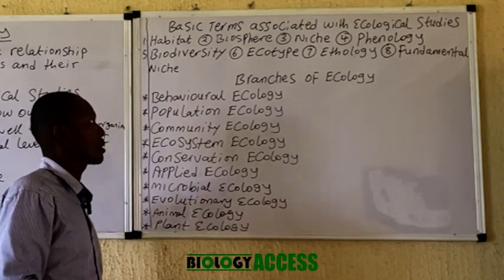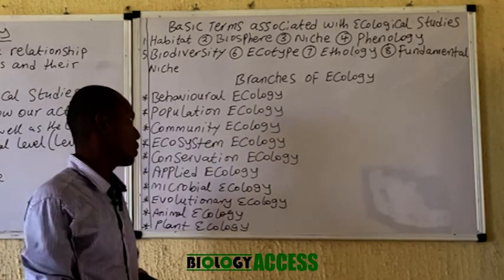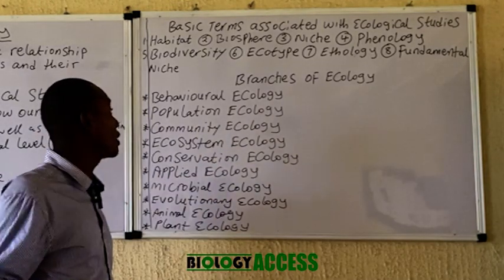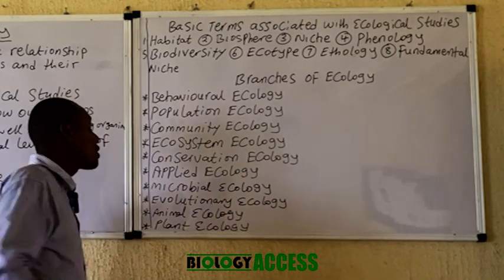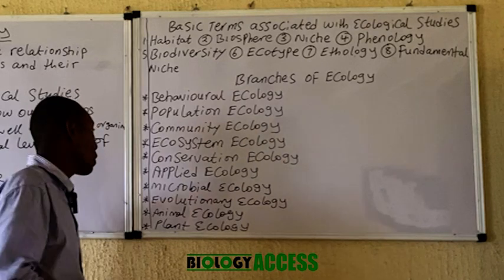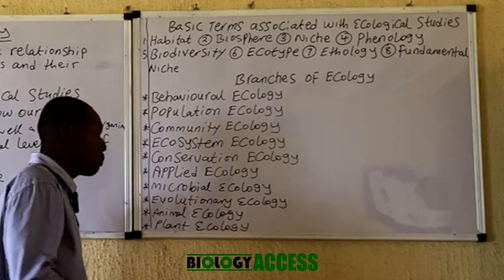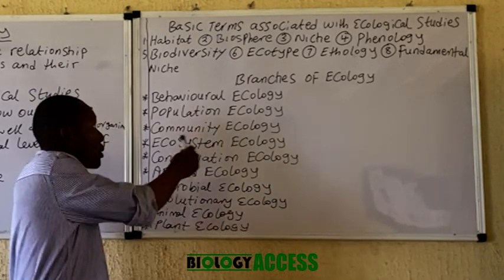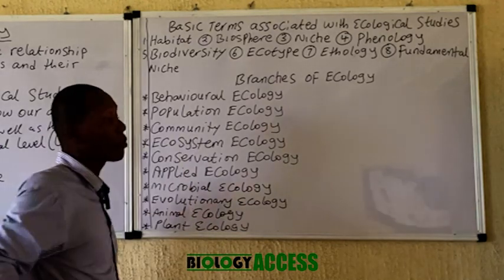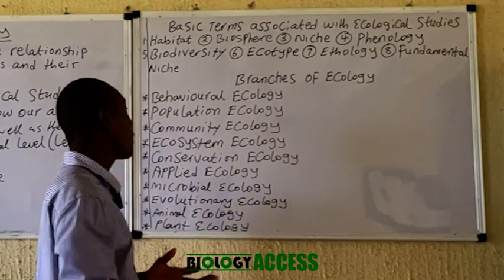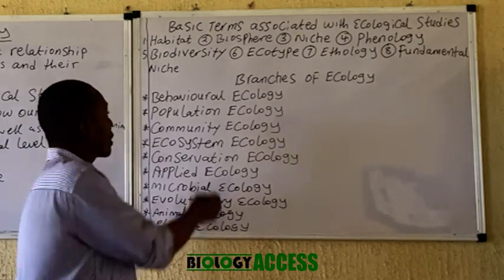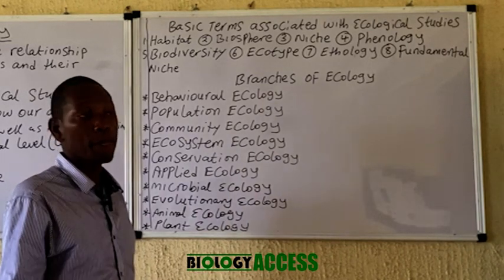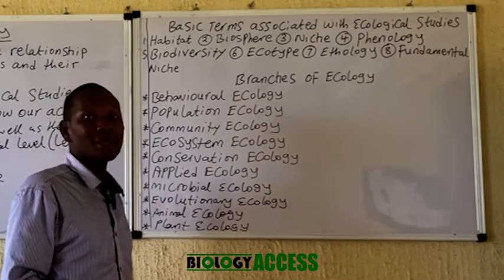Ecology has various branches. We have behavioral ecology, population ecology, community ecology, ecosystem ecology, conservation ecology, applied ecology, microbial ecology, and many more — even some that are not highlighted here. Details on these various types of ecology will be explained in different videos. Behavioral ecology is the study of animal behavior, which is quite straightforward.